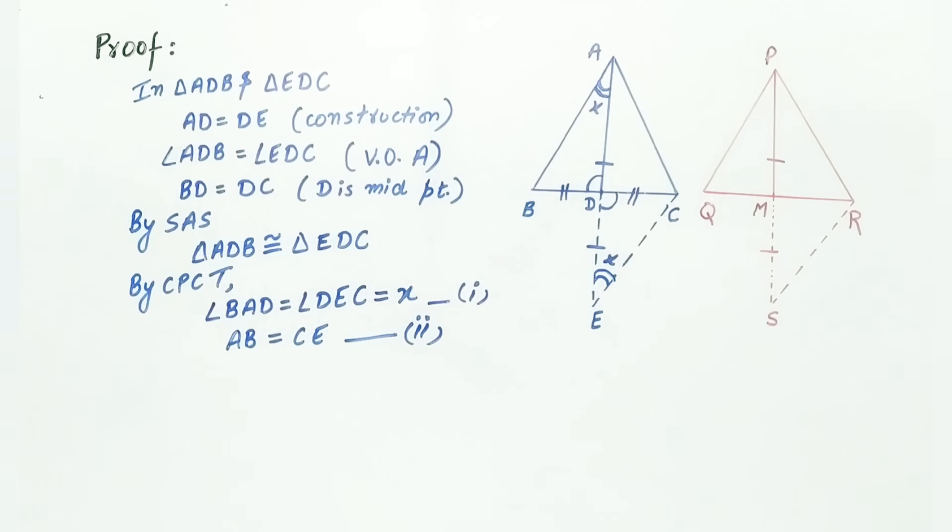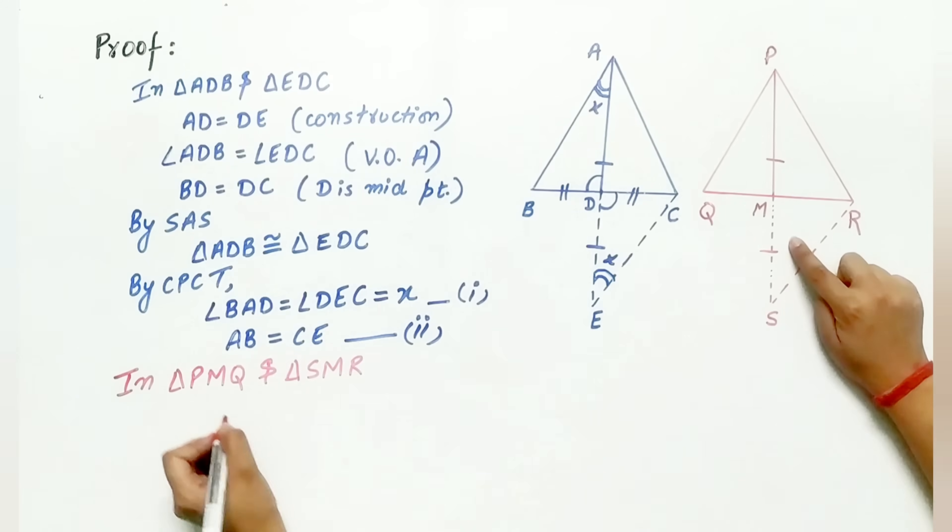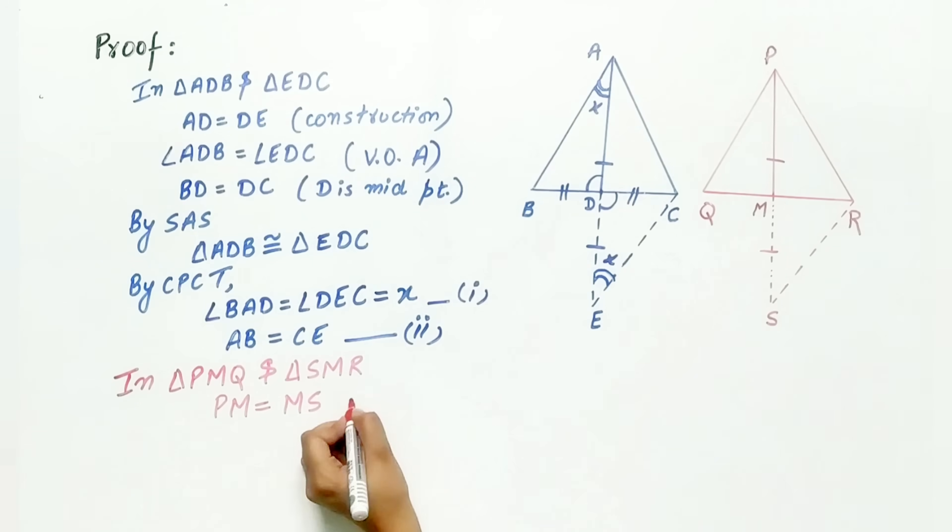Now similarly, we will prove triangle PMQ is congruent to triangle SMR. PM is equal to MS. Why? Because of construction.